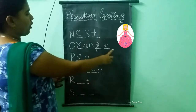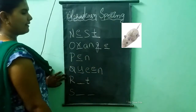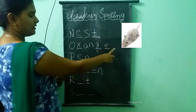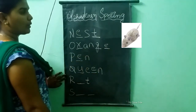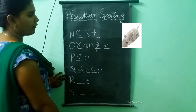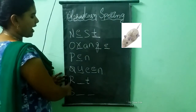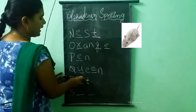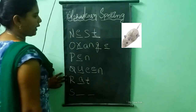What picture is this? This is a rat. What is the spelling of rat? R-A-T. Rat.